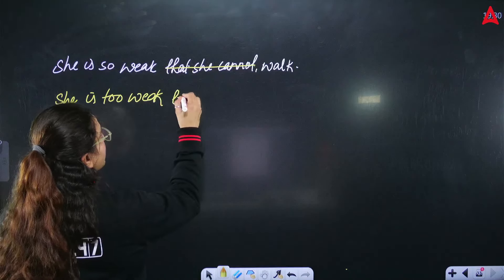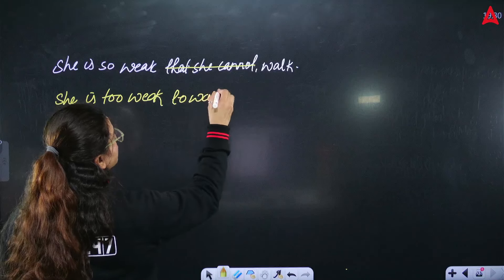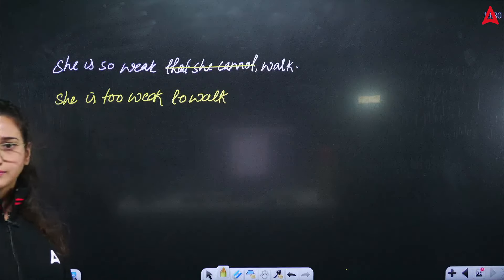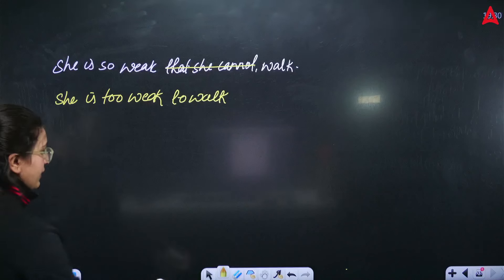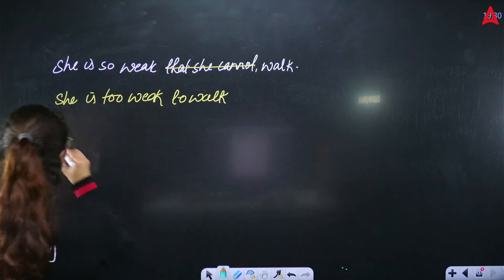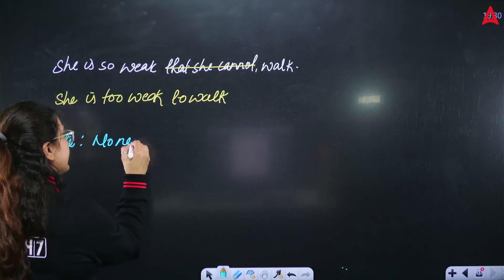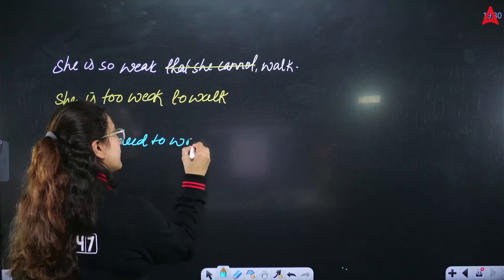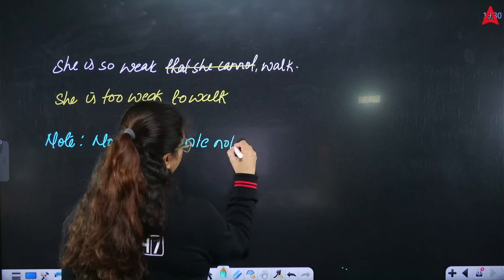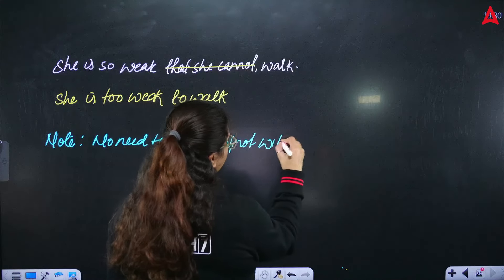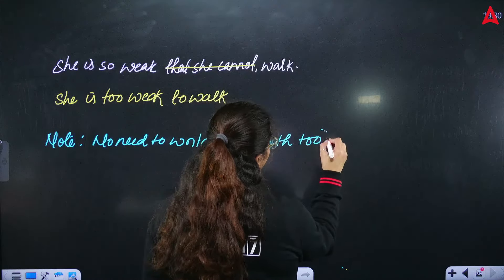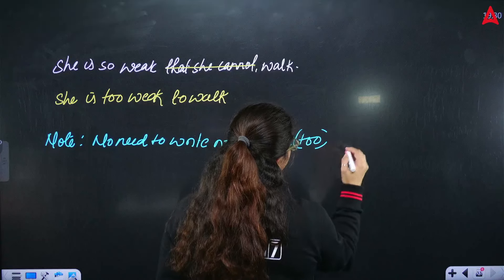Because my too is already negative. So, I will just use too with the first form of the verb. She is too weak to walk. I have intensified this sentence. Right? So, now you can write a note here. So, no need to write no not with too as pair with too.